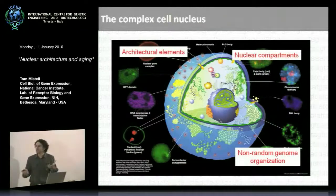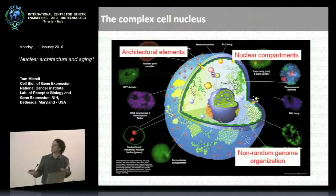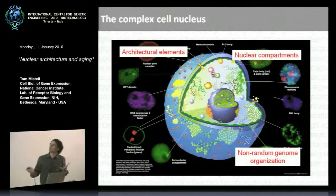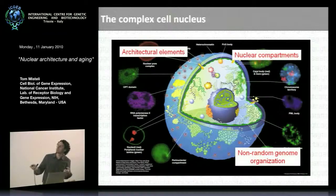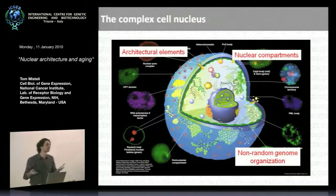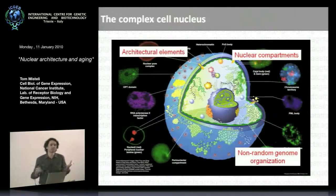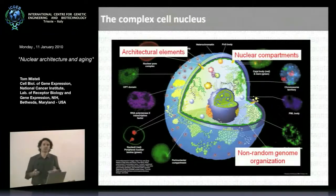One of the most intriguing concepts to emerge is that genomes are actually non-randomly organized within the cell nucleus. Some chromosomes like to be in the center of the nucleus, others at the periphery. The same is true for genes — some associate with the periphery, others with the interior, some with nuclear bodies. There's a lot of confusion in the field about what these positions actually mean, but it's a very active area of research.